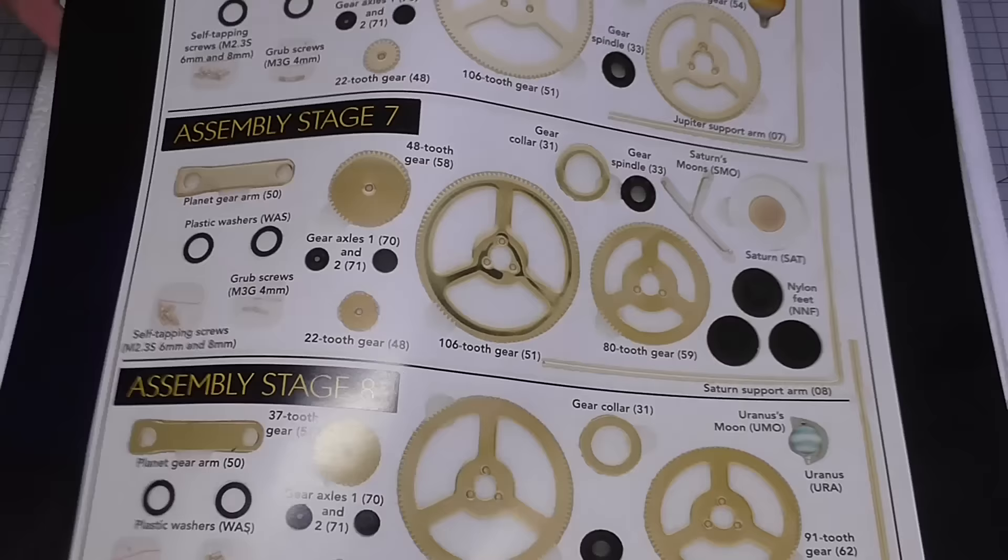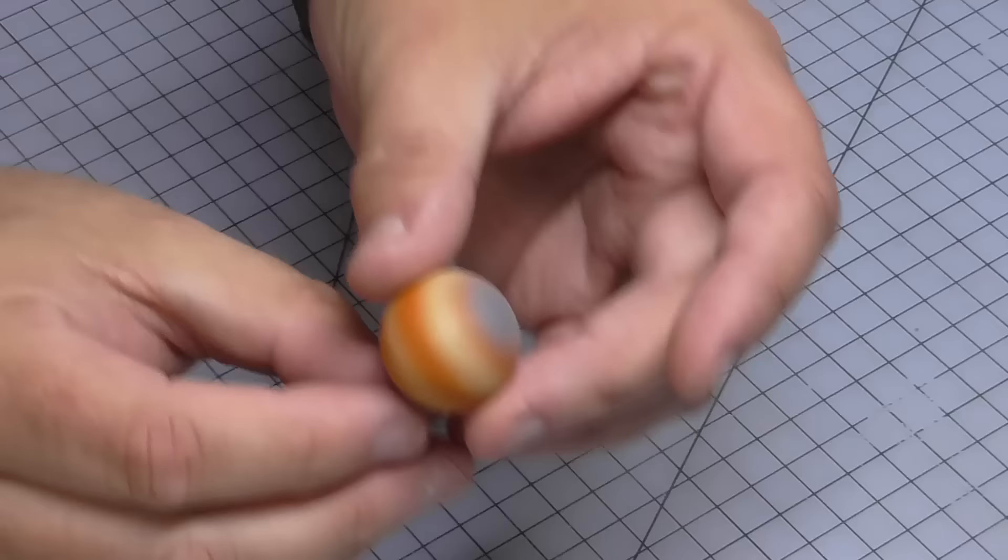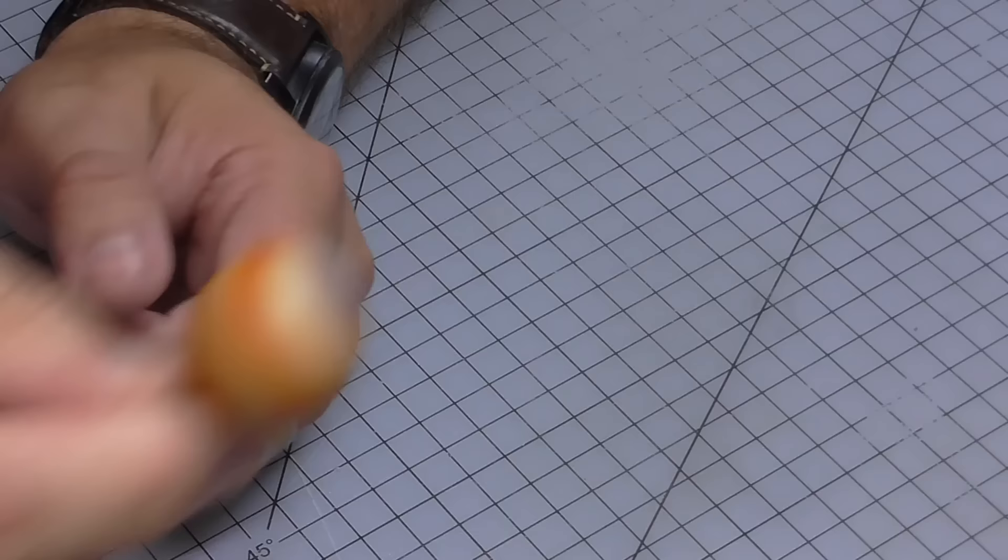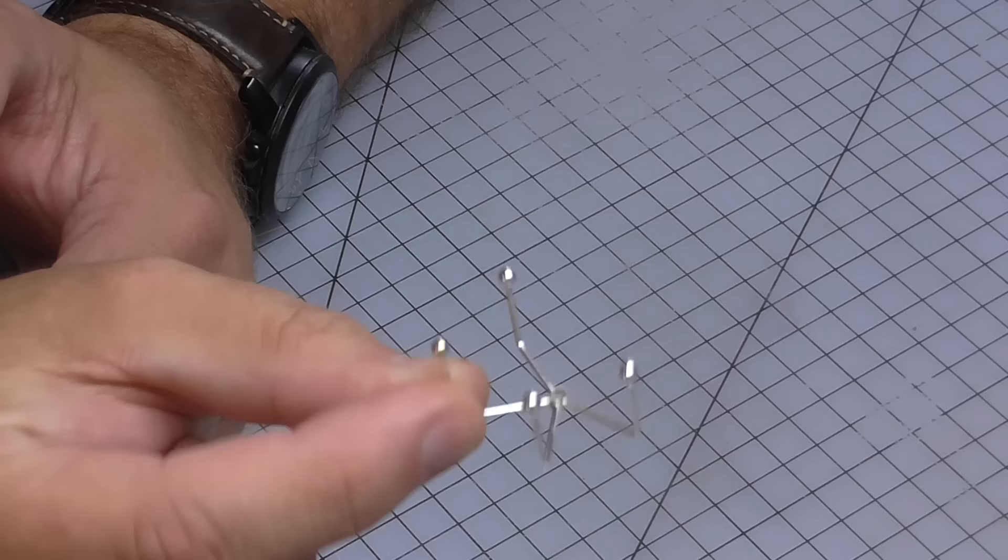So in stage six, the largest planet in the solar system, we're going to be doing Jupiter. So Jupiter is in the top of this tray just here. So I'm going to get all of these parts out. And this is what Jupiter looks like. Pretty cool huh? Now Jupiter has 92 moons but they've got four of the largest ones here which are Io, Europa, Ganymede, and Callisto. So let's do Jupiter.